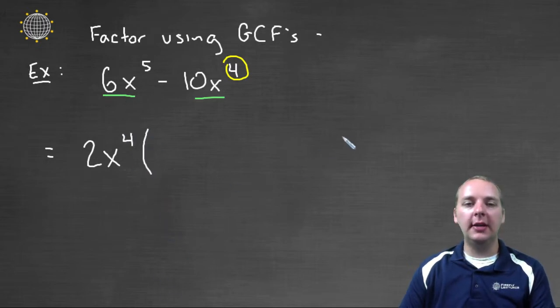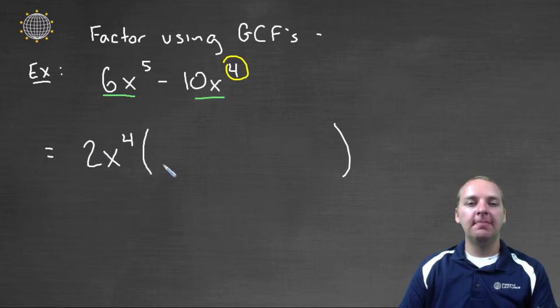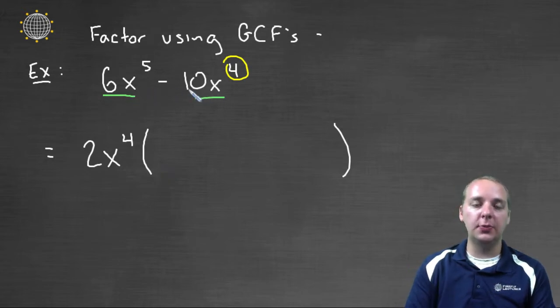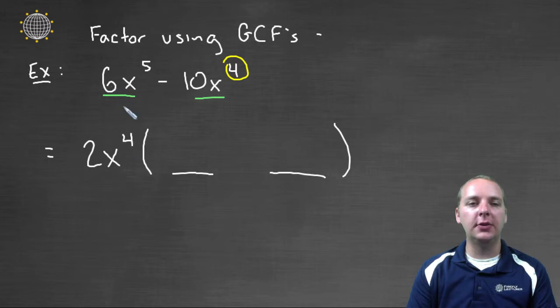So we can factor that out. And then basically next we're going to, you can almost think of this like a game. You can say what do you need here in these two blanks to get your original polynomial if you distributed 2x⁴ through to these two terms. And just as a quick side note, if you start with a polynomial like in this case with two terms and you pull out a GCF, you're still going to have two terms in that polynomial. Don't think you're going to reduce the number of terms that you have or anything. You'll still have two terms here.